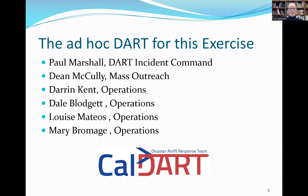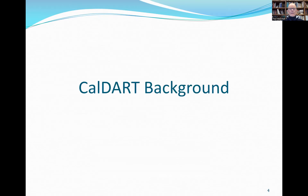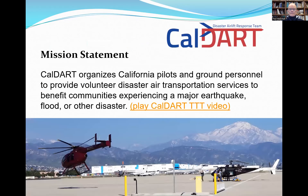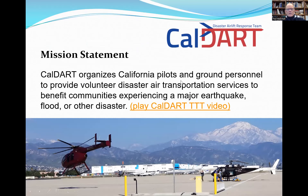That's our ad hoc DART. A little background about Cal DART: our mission statement is that we organize California pilots and ground personnel to provide volunteer disaster air transportation services to benefit communities experiencing a major earthquake, flood, or other disaster. This picture is on the tarmac at San Bernardino — West Klein is taking off for a flight there. I'd like to go ahead and play a video to go along with this.